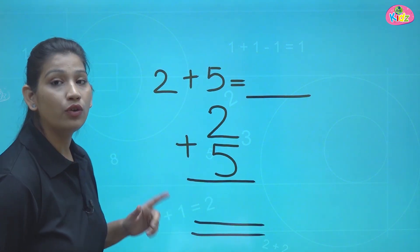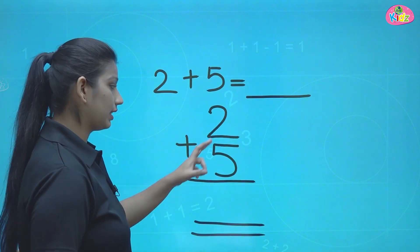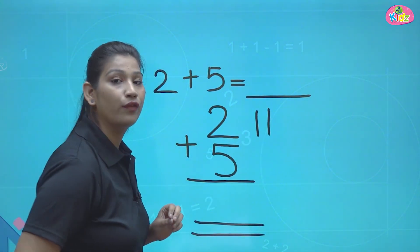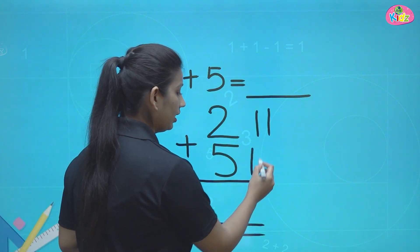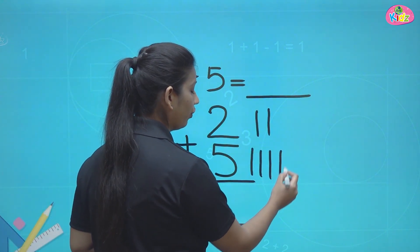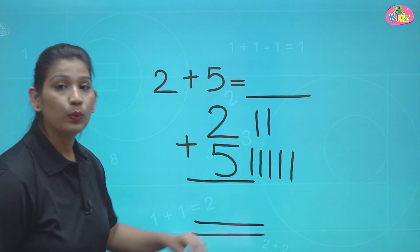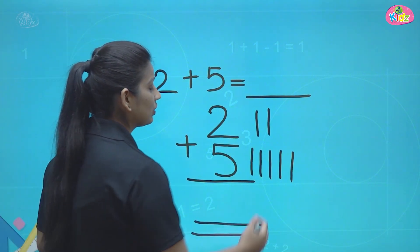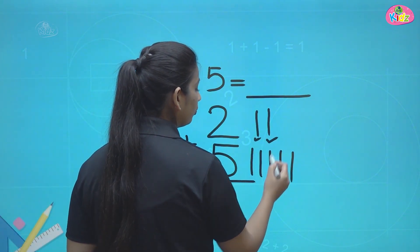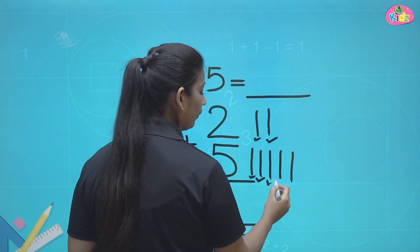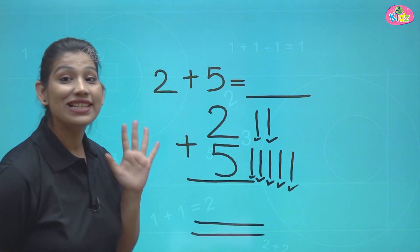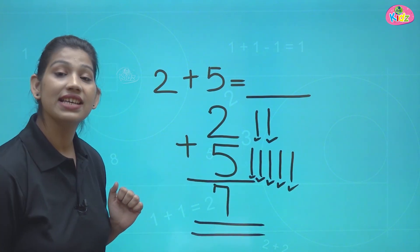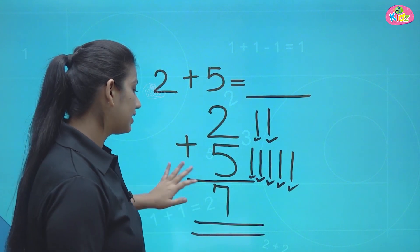So what we have to do? We first have to draw lines. 1, 2. 1, 2, 3, 4, 5. Now we will count the total number of lines and find out our answer. So we have 1, 2, 3, 4, 5, 6, 7. We have 7 lines. That means 2 plus 5 is 7.